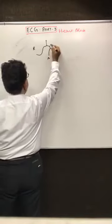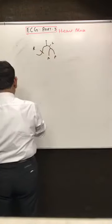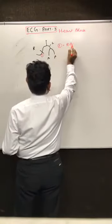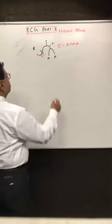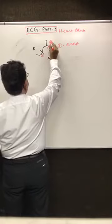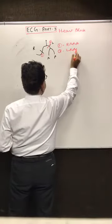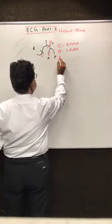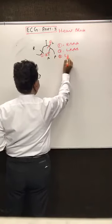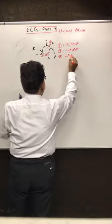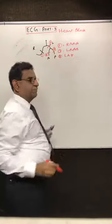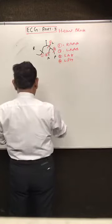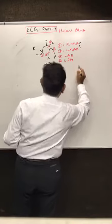If blocking occurs at site number one, we call it right bundle branch block. If blocking occurs at site number two, it is left bundle branch block. If blocking occurs at site number three, it is left anterior hemiblock. And if blocking occurs at site number four alone, we call it left posterior hemiblock.